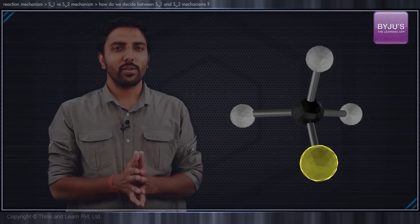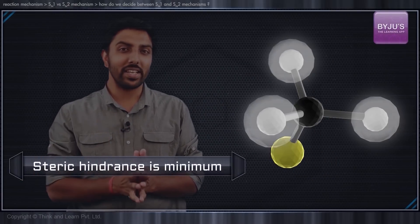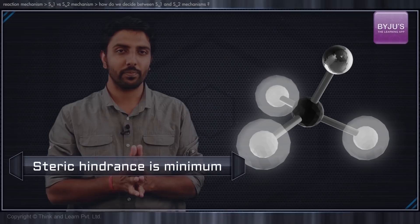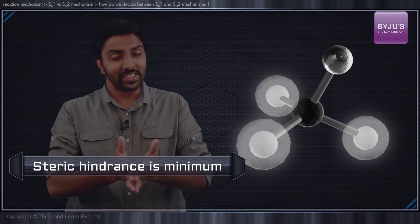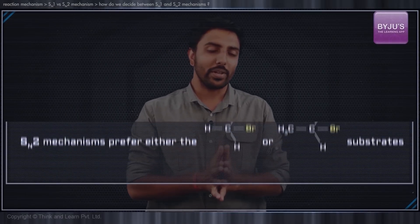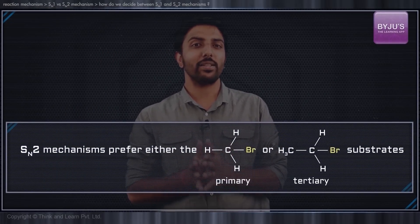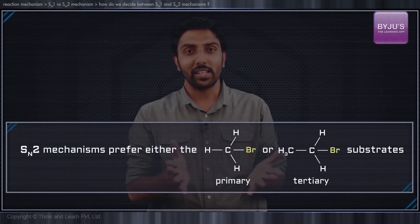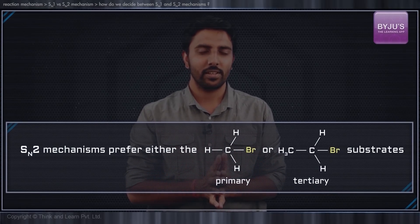What is the advantage of this arrangement? Well, it keeps the steric hindrance to a bare minimum, and this is the reason why SN2 reactions always prefer either the primary substrates or the methyl substrates.